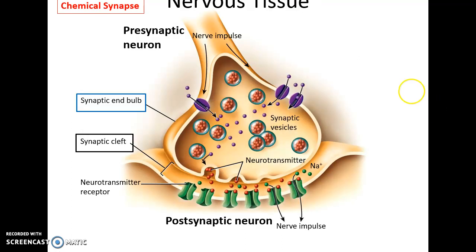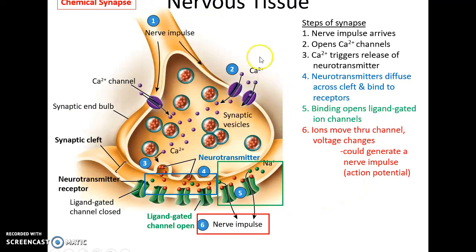At a close-up of a synapse: the synaptic end bulb at the end of the presynaptic neuron, the synaptic cleft separating it from the postsynaptic neuron membrane, and neurosynaptic vesicles within the end bulb storing neurotransmitters. When a nerve impulse arrives, it opens voltage-gated calcium ion channels; calcium enters and binds to synaptic vesicles, causing them to release neurotransmitters into the synaptic cleft via exocytosis. Neurotransmitters cross the cleft via diffusion and bind to ligand-gated ion channels on the postsynaptic neuron, allowing ions — usually sodium — to enter.